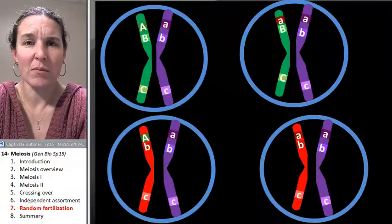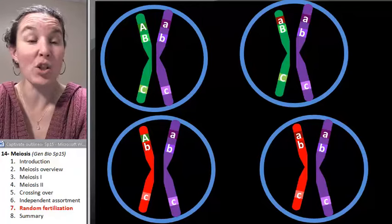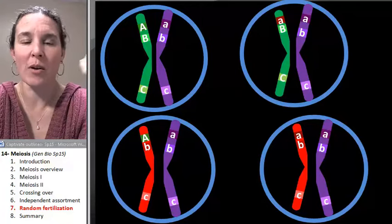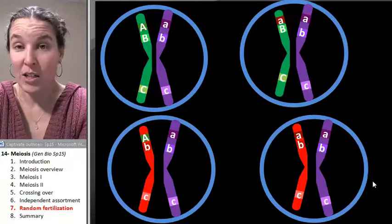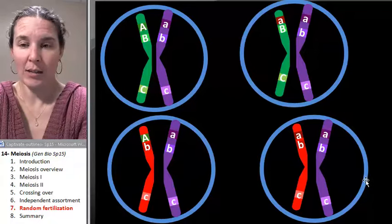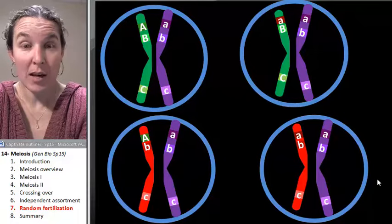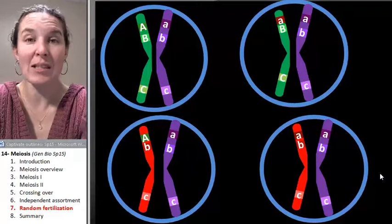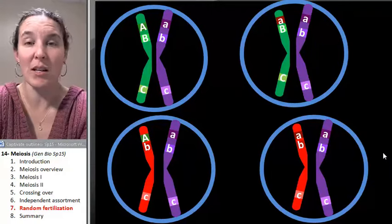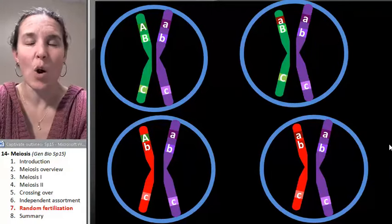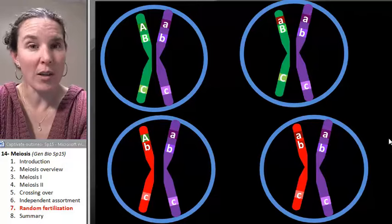That's it. But actually, I mean, it's super mind boggling, but it's pretty straightforward. And random fertilization isn't a process of meiosis. Meiosis produces the gametes that then random fertilization is going to produce the genetic diversity, which hopefully you're like,